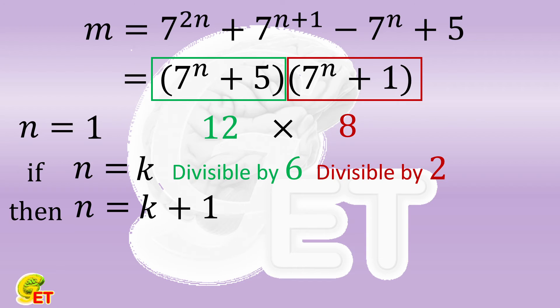The first factor becomes 7 times 7 to the power of k plus 5. We divide 7 times 7 to the power of k into 7 to the power of k and 6 times 7 to the power of k. 7 to the power of k plus 5 is divisible by 6, and 6 times 7 to the power of k is certainly also divisible by 6.